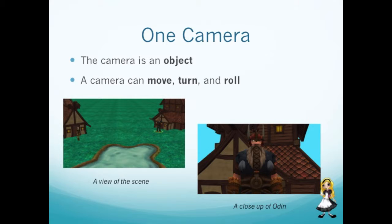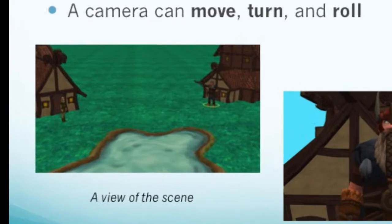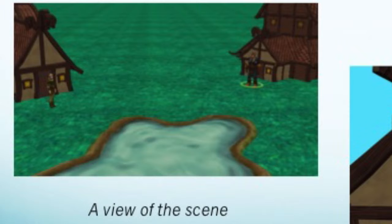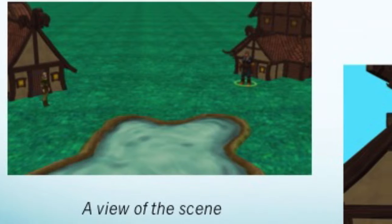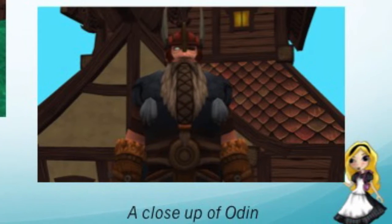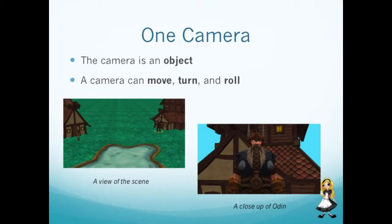In Alice, a camera marker is an object that remembers the position and orientation of the camera at the time the marker was created. The camera can then be moved or rotated to a different location and orientation, but the marker stays where it was originally created.